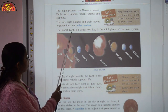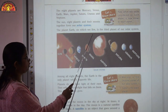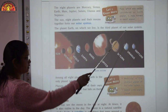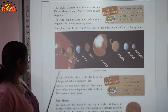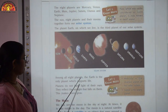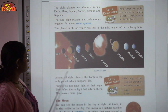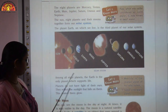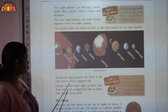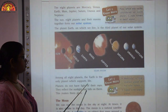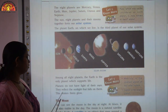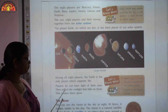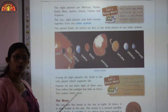The planet Earth on which we live is the third planet of our solar system. Among all the eight planets, the Earth is the only planet which supports life. Planets do not have light of their own. They reflect the sunlight that falls on them, which makes them glow.